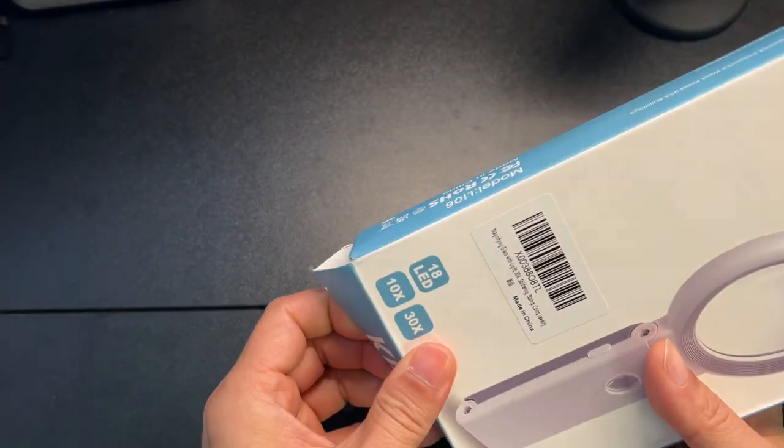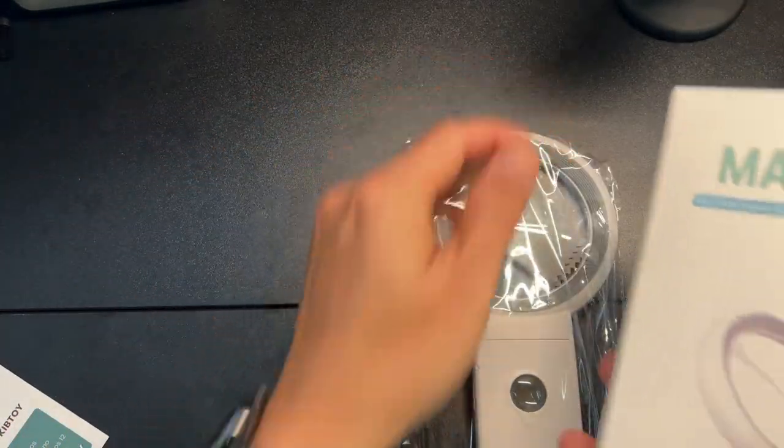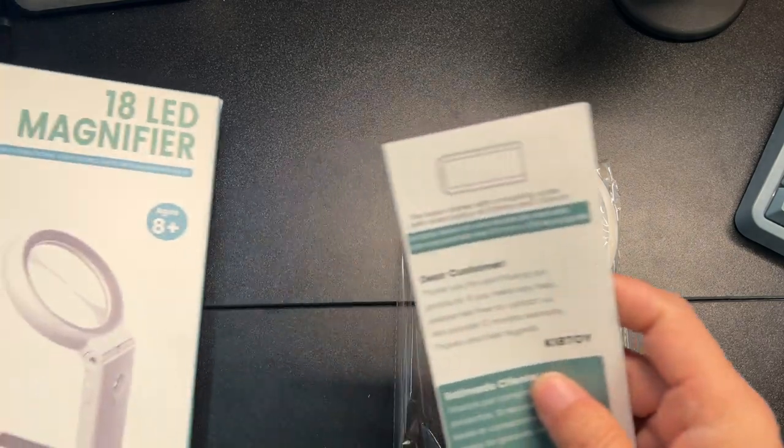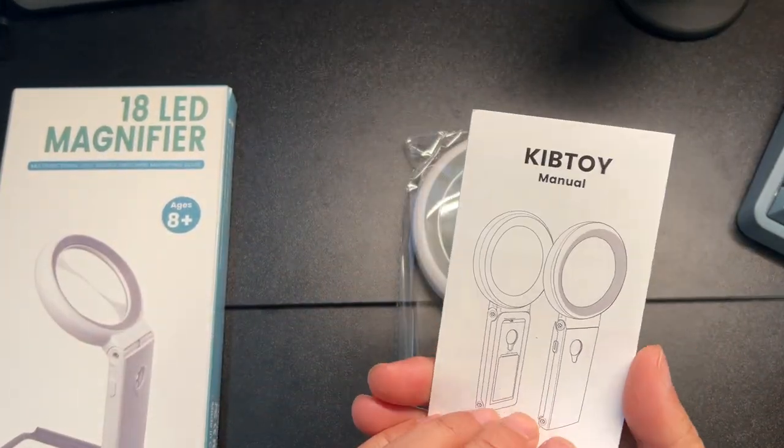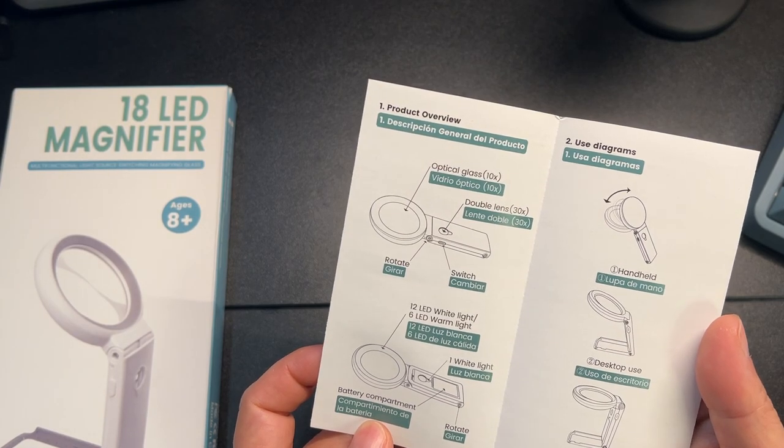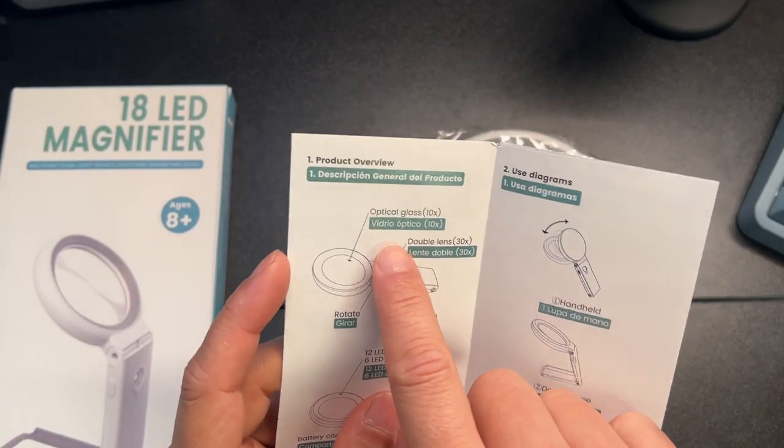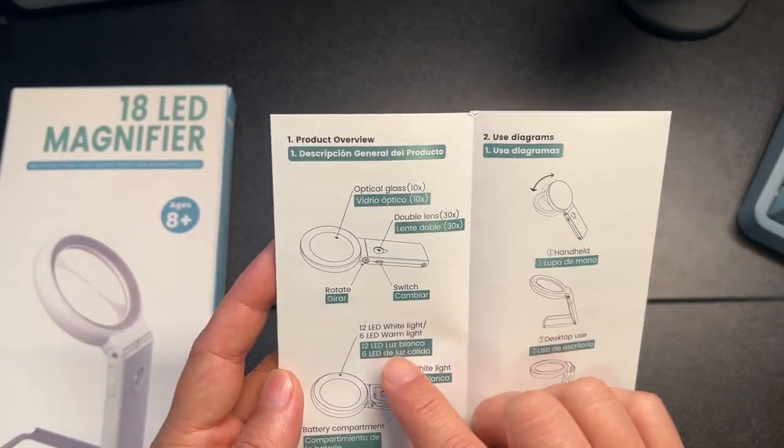Out of the box you get basic instructions. The 30x lens is actually right here in the middle, and then the big lens is 10x.